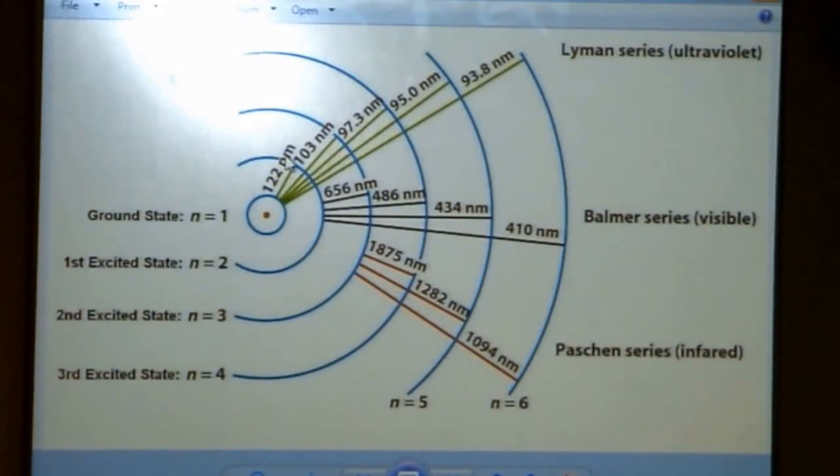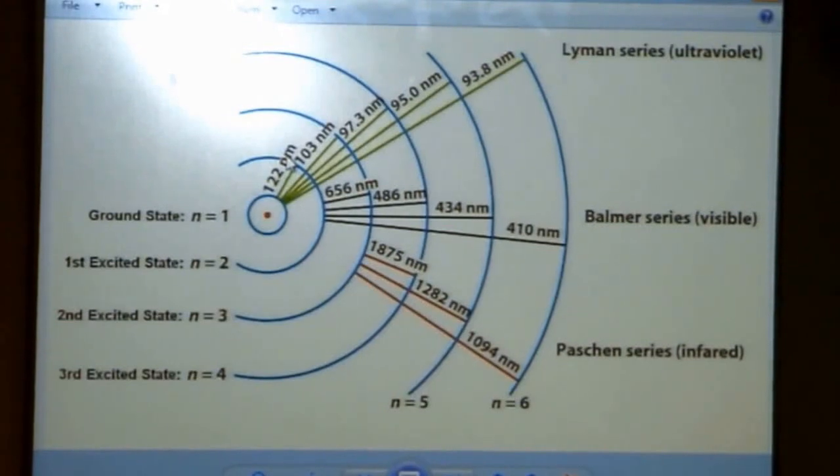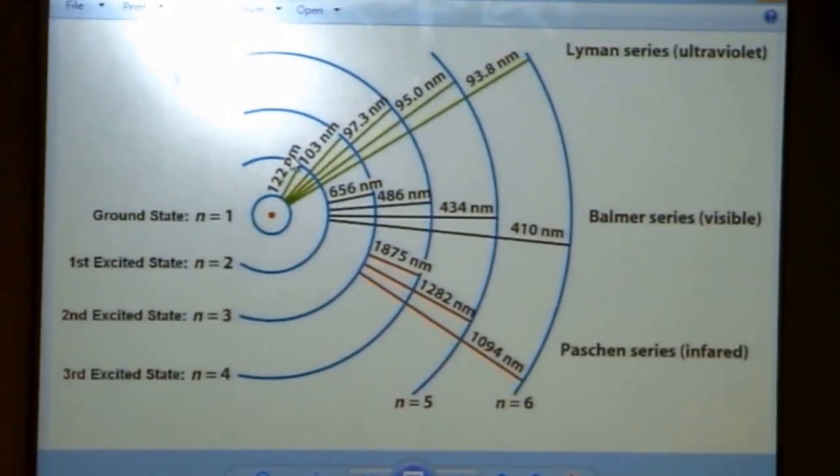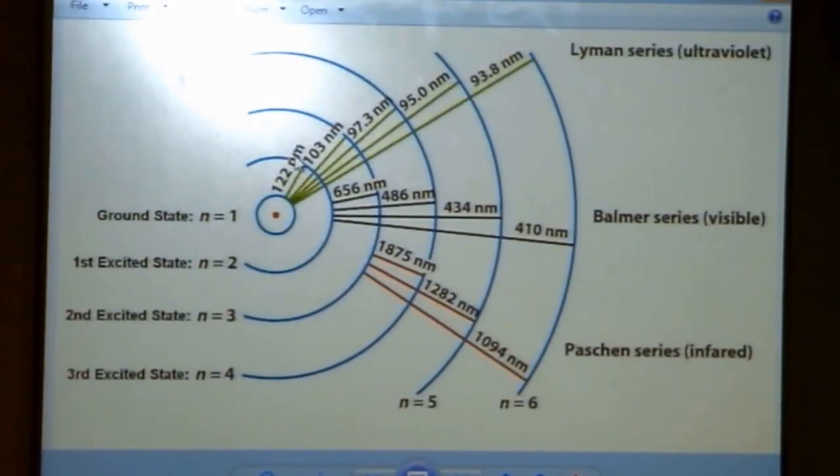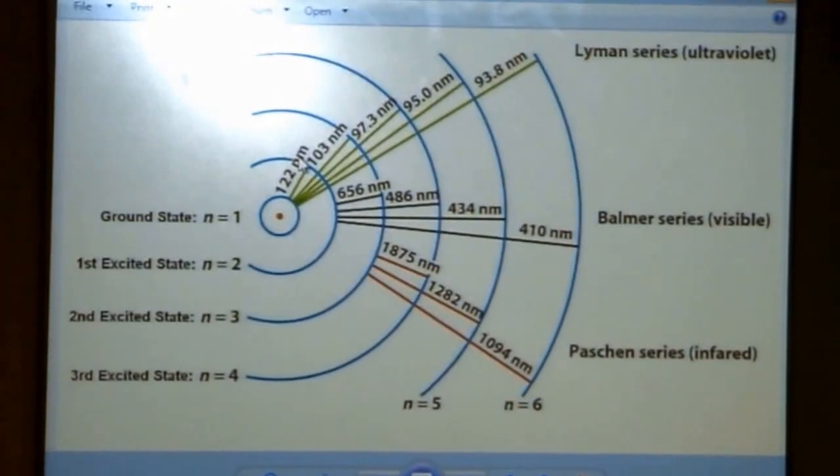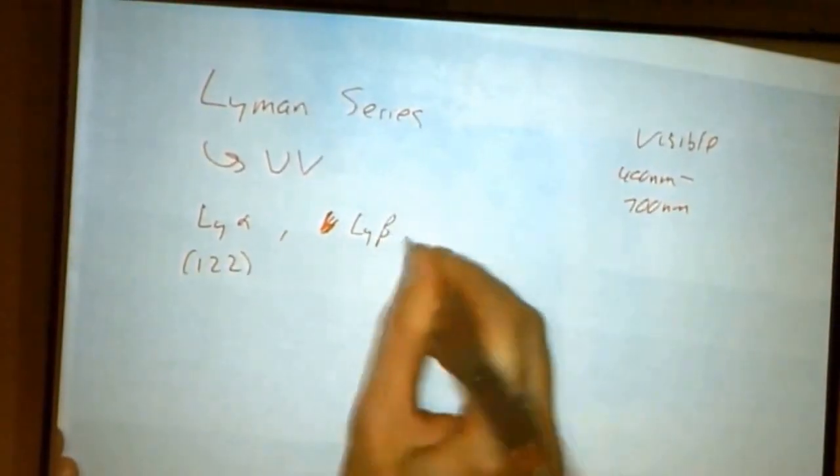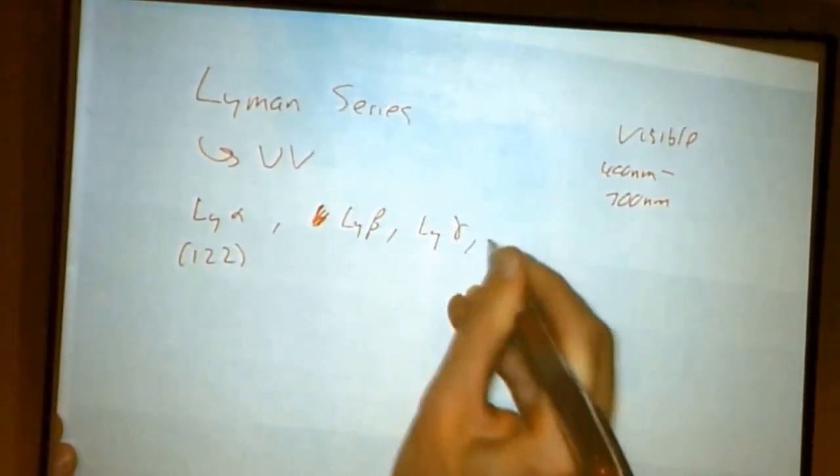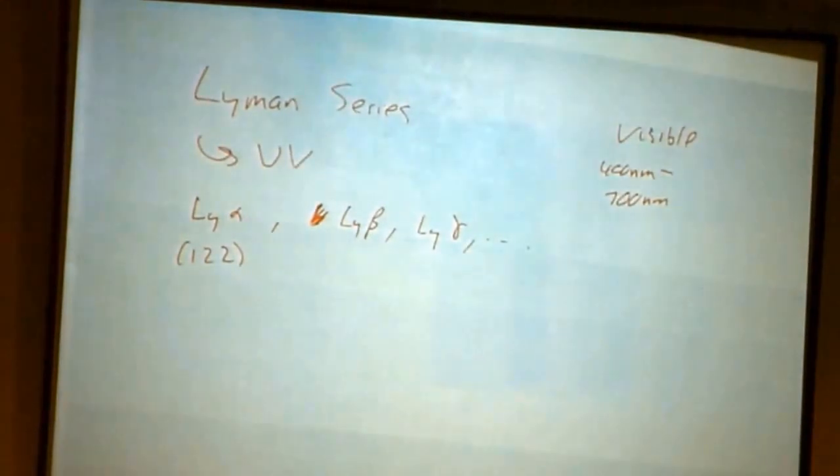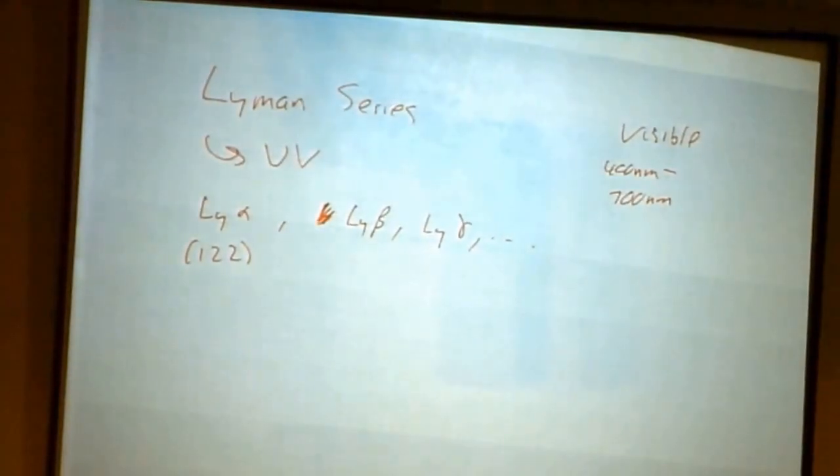The Lyman series absorption will all be in the ultraviolet. And the terminology there is Lyman alpha is the first one, that's the 122 nanometer. The second one in a series is Lyman beta, Lyman gamma, etc. So we see alpha, beta, gamma, delta, epsilon.